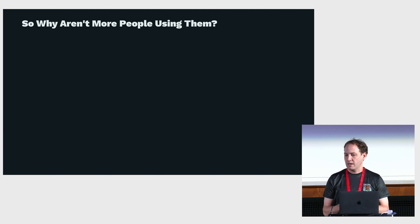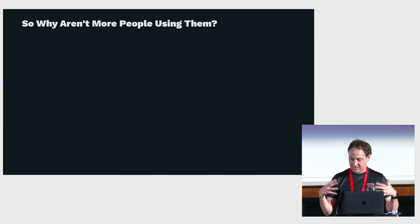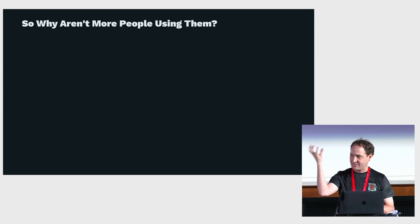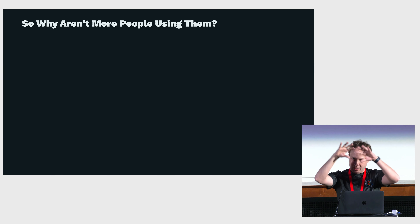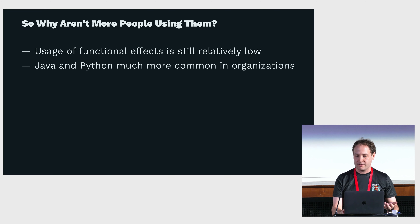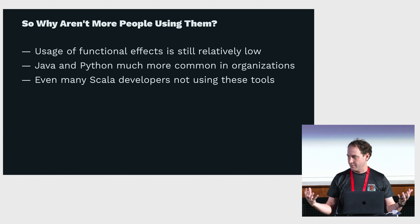Functional effects are great, but we might ask ourselves: if they're so great, why isn't everyone using them? A lot of us are lucky enough to be in organizations where we get to do Scala, functional Scala — but we have to acknowledge there's a subset of organizations that use that and a lot that don't. Even within organizations that do, we often have a little island of functional Scala within a broader realm of Python, Java, and much more imperative and object-oriented programming. Even a ton of Scala developers use tools that are not functional.